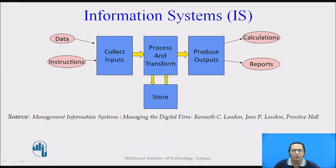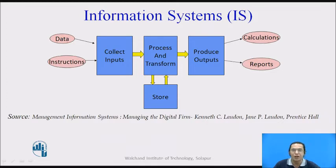A very simple diagram can be shown for the information system. It collects the input, which is data and instructions, then processes this input — which may be stored for later use or consumed immediately — to produce the output. The output may be some calculation, some report, or some suggestion. That is what we call an information system.